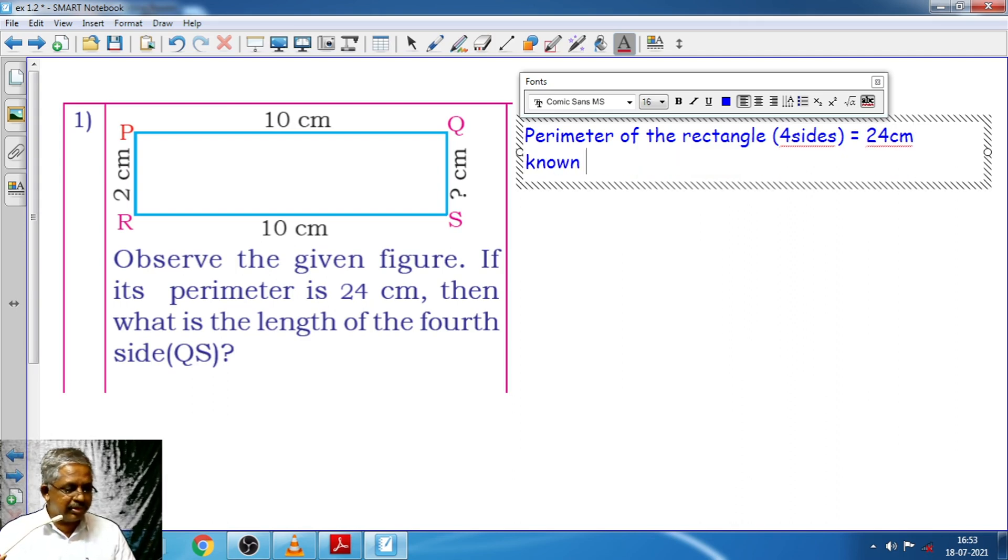Then known sides are in this rectangle which is PQ plus SR plus RP, which is equal to 10 plus 10, 20, 20 plus 2, 22 cm.